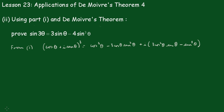In part 2, using part 1 — that is, (cosθ + i sinθ)³ equals the result from part 1 — and De Moivre's Theorem, we prove that sin 3θ = 3sinθ - 4sin³θ. From De Moivre's Theorem we know that (cosθ + i sinθ)³ = cos 3θ + i sin 3θ.